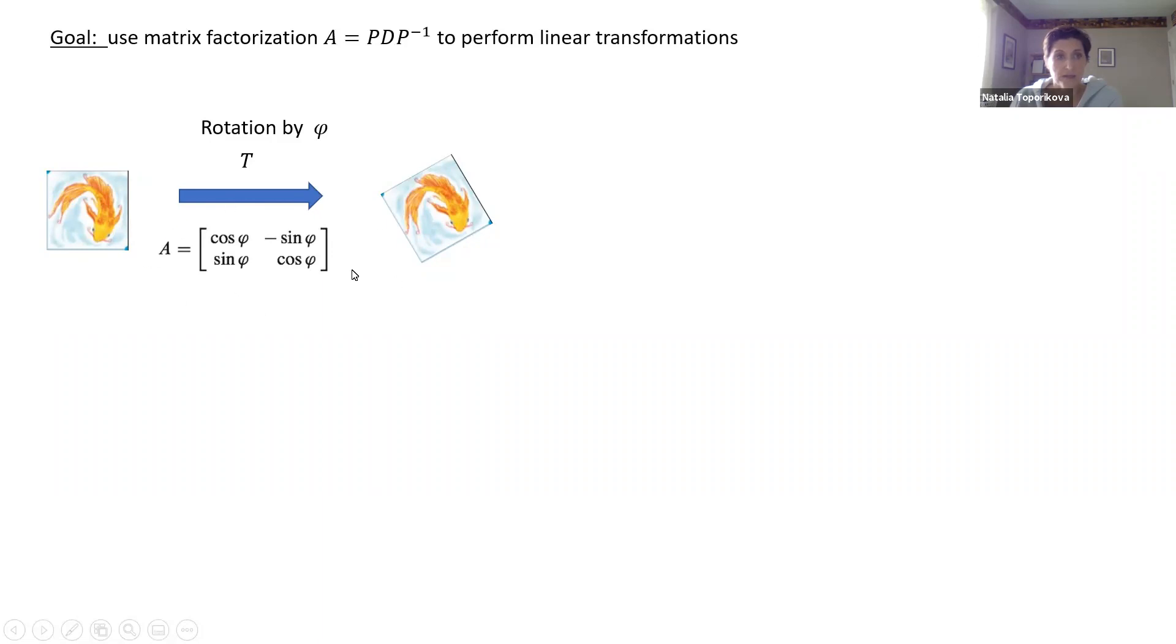And this is the matrix of the transformation. So if we know the angle, we can calculate our matrix and apply it to every single pixel of our pictures. So every single pixel, let's call it X, will become its image T(X), which is just a multiplication by a matrix. Really not a big deal. Just take every pixel and multiply.